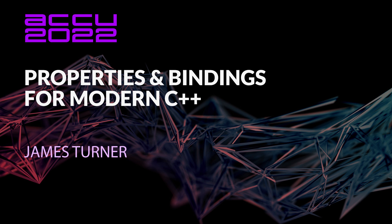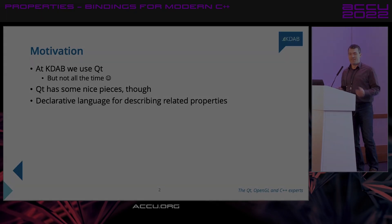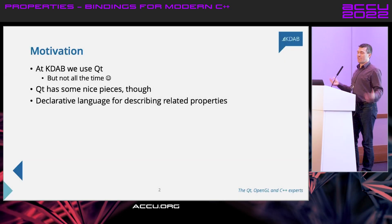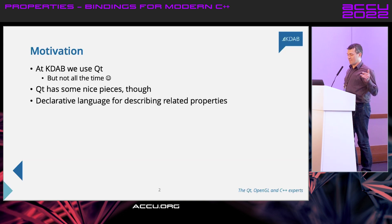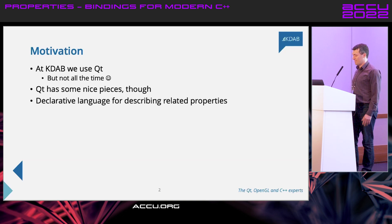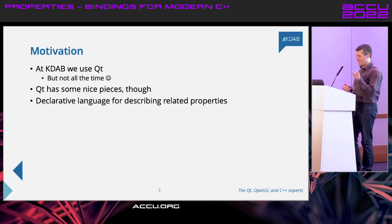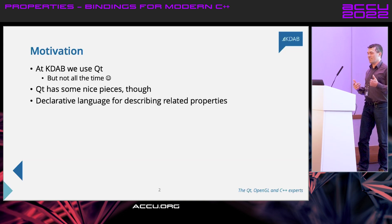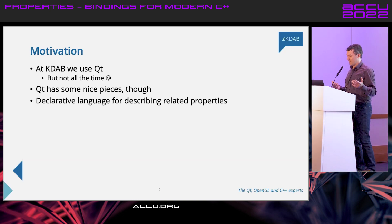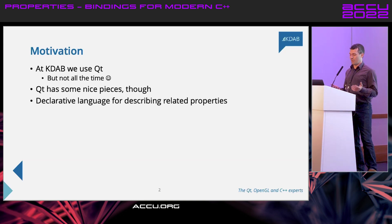I'm going to talk about properties and bindings in modern C++. I work at a software consulting company called KDAB. You can see at the bottom it says the Qt, OpenGL, and C++ experts. So we do a lot of consulting around Qt, and we do a lot around non-Qt stuff with C++ and with OpenGL. We use Qt and we like Qt, but we don't use Qt all the time.